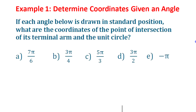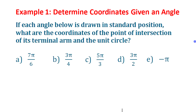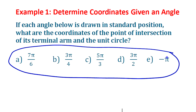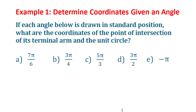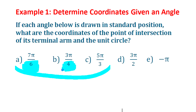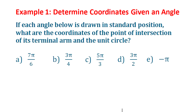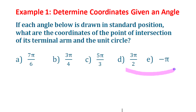Let's look at applying that now — finding coordinates for given angles. The first three angles have denominators related to the special triangles: something related to π/6, something related to π/4, and something related to π/3. We can use those special triangles as reference triangles. The last two angles are not related to special triangles, so we'll look at those differently using just the unit circle.